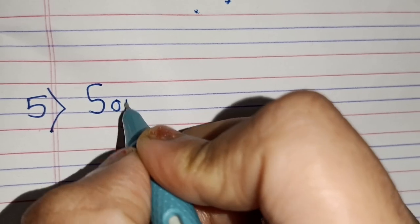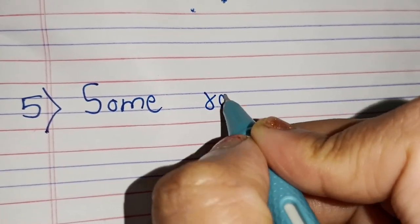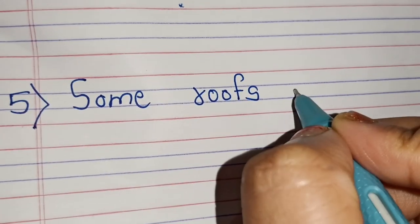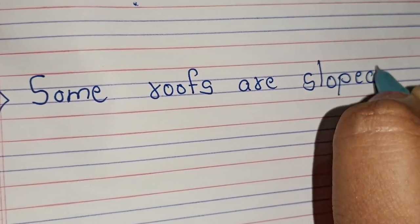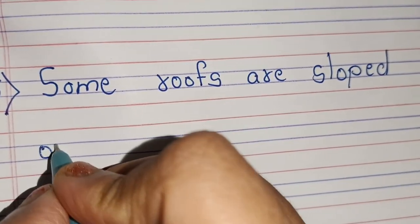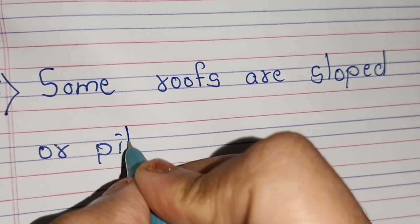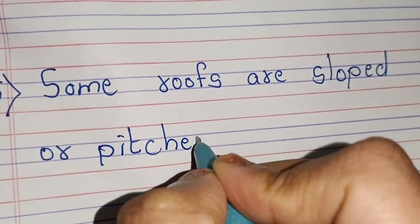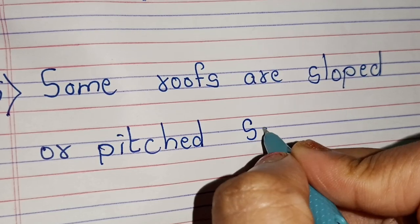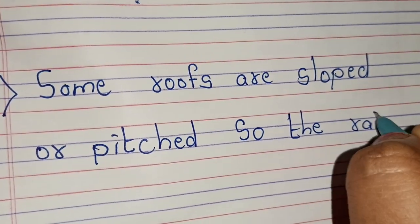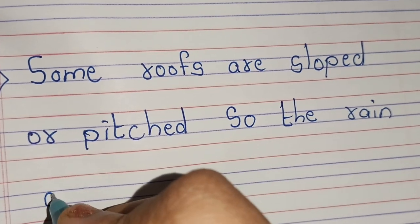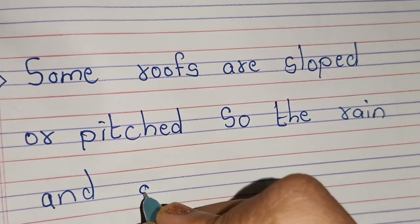Fifth point: some roofs are sloped or pitched, so the rain and snow fall off easily.